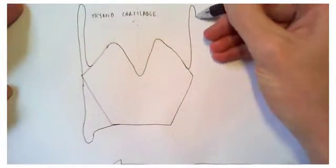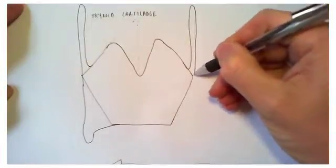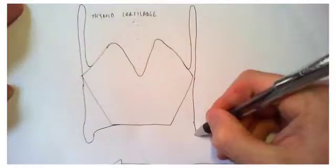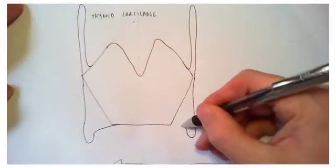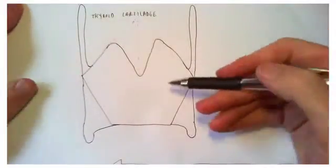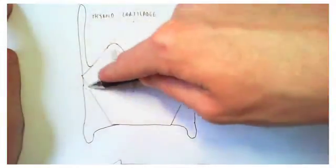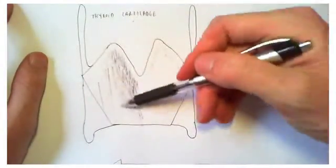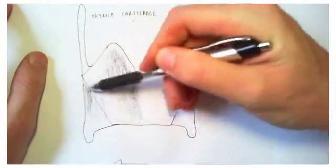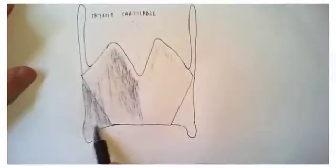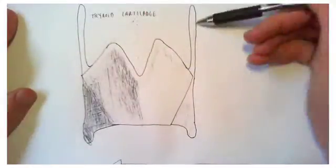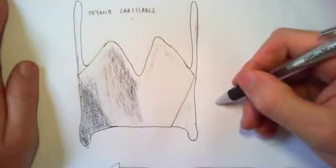And then they continue on all the way down and you have these short stubs which are the inferior cornua. And when I finish the other side here, that is basically the shape of the thyroid cartilage as viewed from the front. So I'm just going to go a little bit crazy shading everything in. But by and large that's how you draw it.